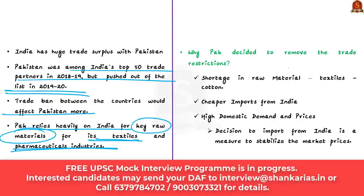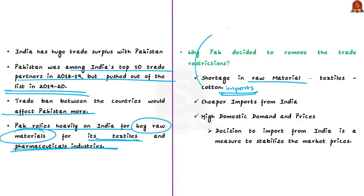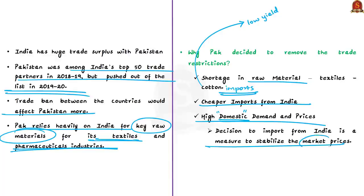Pakistan's rationale for resuming trade included: first, shortage of raw materials for its textile sector due to low domestic cotton yields; second, cheaper imports from India compared to costlier and slower options from the US and Brazil; and third, high domestic demand and prices for sugar. The decision to import sugar and other items was a measure to stabilize domestic market prices in Pakistan, but Pakistan has since reversed this decision citing the Kashmir issue.